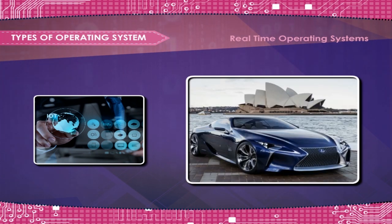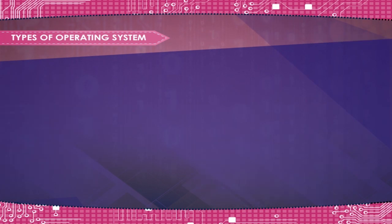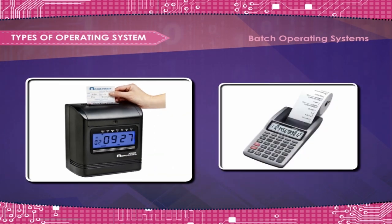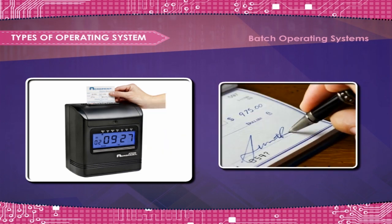Real Time Operating Systems monitor external events and react instantaneously. Batch Operating Systems are used for running batch operations such as calculating and printing customers' bills. They often run a single task for hours or even days at a time — like banks process millions of checks each month. These are processed together in a long run, usually overnight.